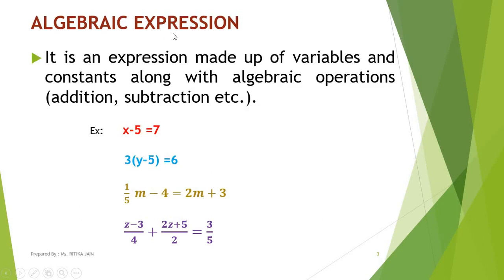An algebraic expression is an expression made up of variables and constants along with algebraic operations like addition, subtraction, etc. For example, x minus 5 equals 7 — here x is an unknown quantity because its value is not known to us; we will calculate it. Similarly for y, m, and z. The unknown quantities are known as variables.